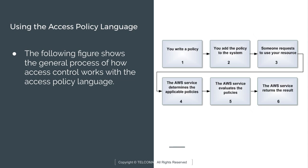Someone requests to use your resource. We have created a policy and added the policy to the system. Amazon Web Services determines the applicable policy, the AWS service evaluates the various policies, and then returns the result. This is the process of access control using the access policy language.